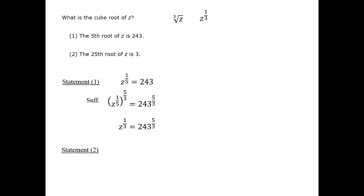Statement 2 is sufficient according to identical logic. We'll have the 1/25th root, and from there, we'll be able to perform legal operations to get the 1/3rd root. Therefore, statement 2 is also sufficient. The correct answer is D.